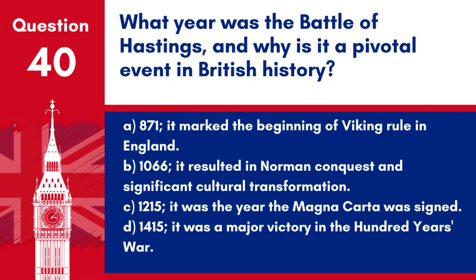Question 40. What year was the Battle of Hastings, and why is it a pivotal event in British history? a. 871 – it marked the beginning of Viking rule in England. b. 1066 – it resulted in Norman conquest and significant cultural transformation. c. 1215 – it was the year the Magna Carta was signed. d. 1415 – it was a major victory in the Hundred Years' War. Answer: b. The Battle of Hastings in 1066 is a pivotal event in British history because it led to the Norman conquest of England, which had profound effects on the English language, culture, and governance.